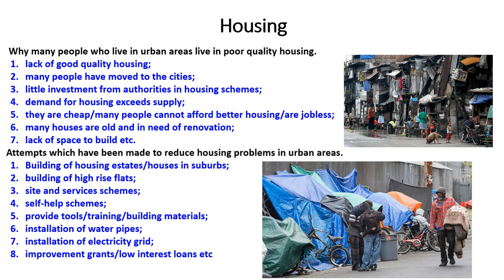Another problem of urban growth is housing. Many people in urban areas live in poor quality housing because of a lack of good quality housing, and when it is available it is too expensive. Many people are jobless and cannot afford it. Increasing urbanization means the housing supply is insufficient. There is little investment from authorities in housing, demand exceeds supply, many houses are old and need renovation, and there is lack of space to build.